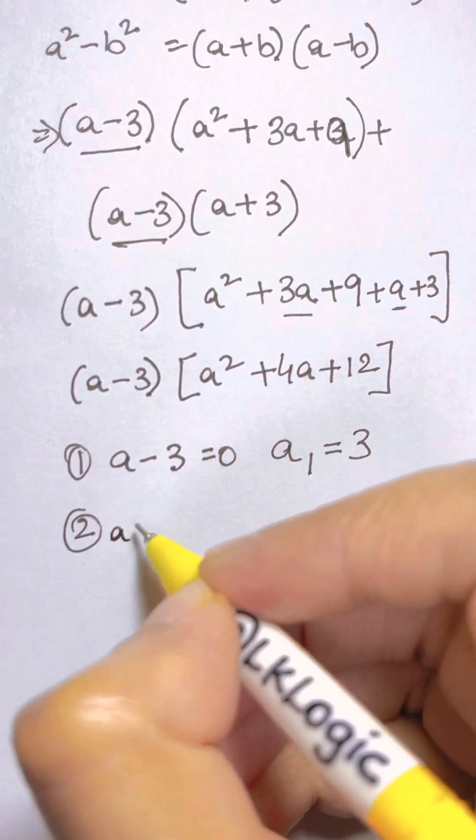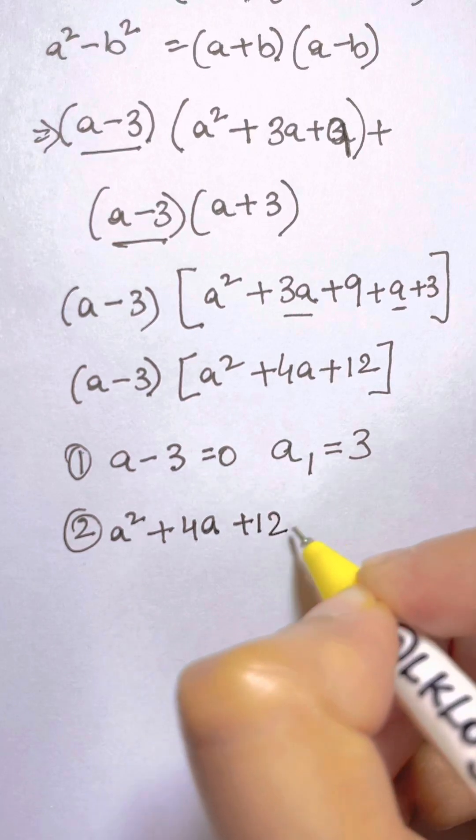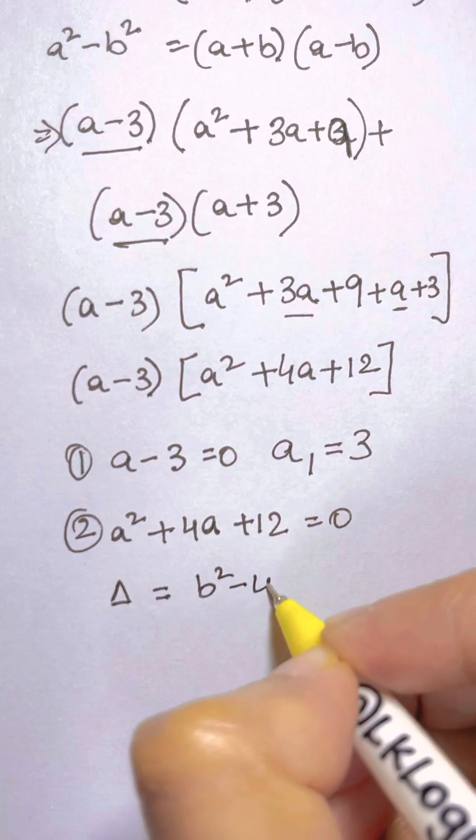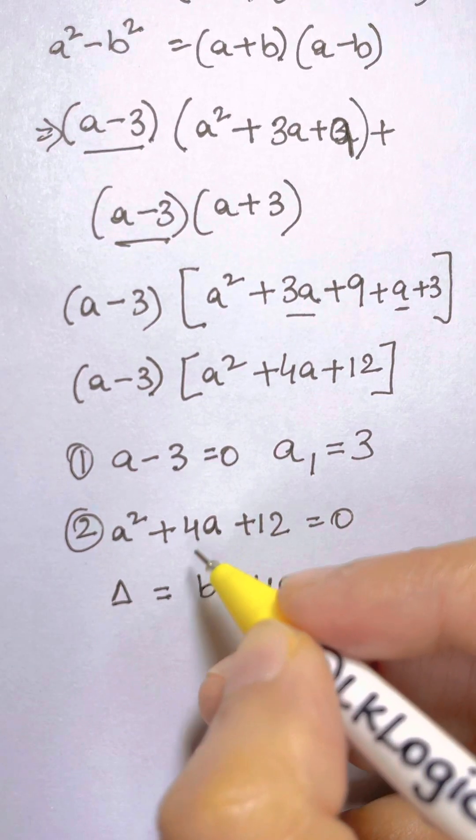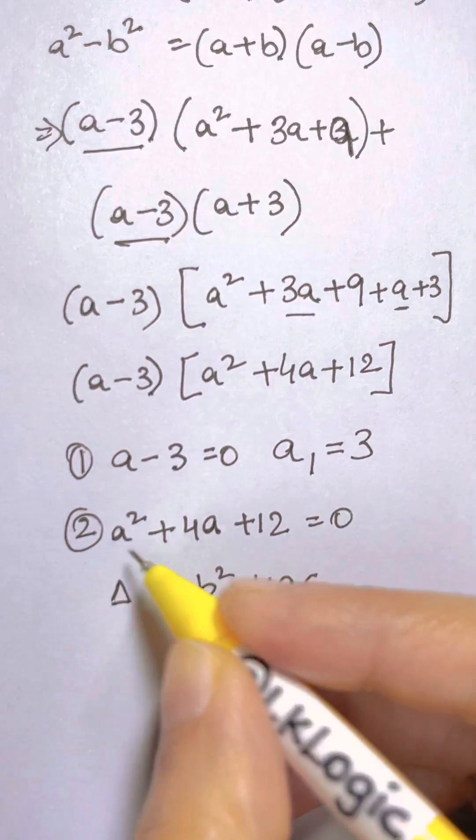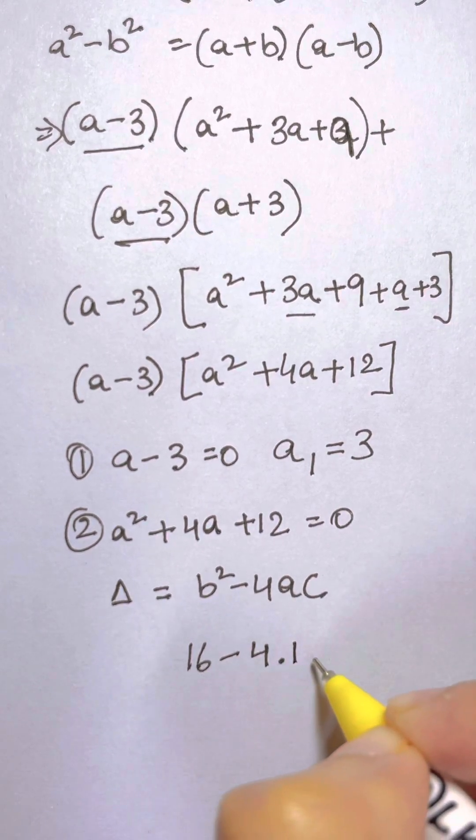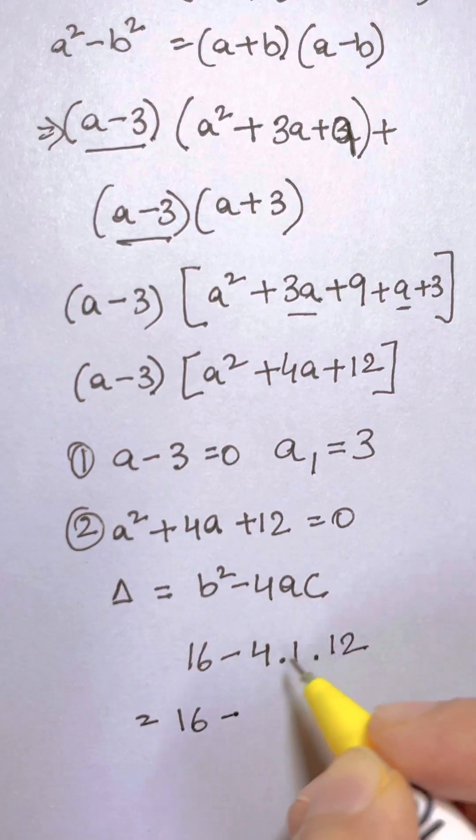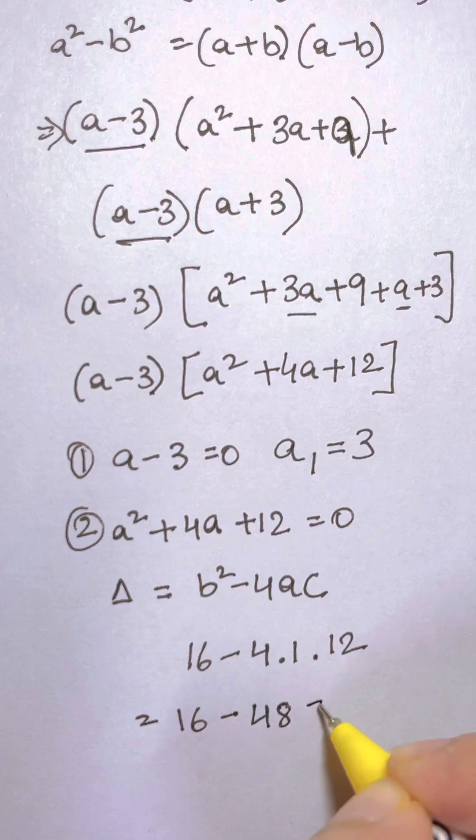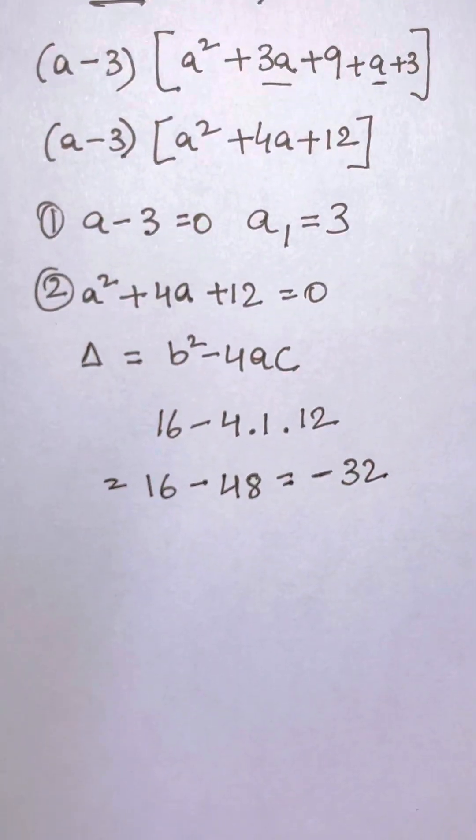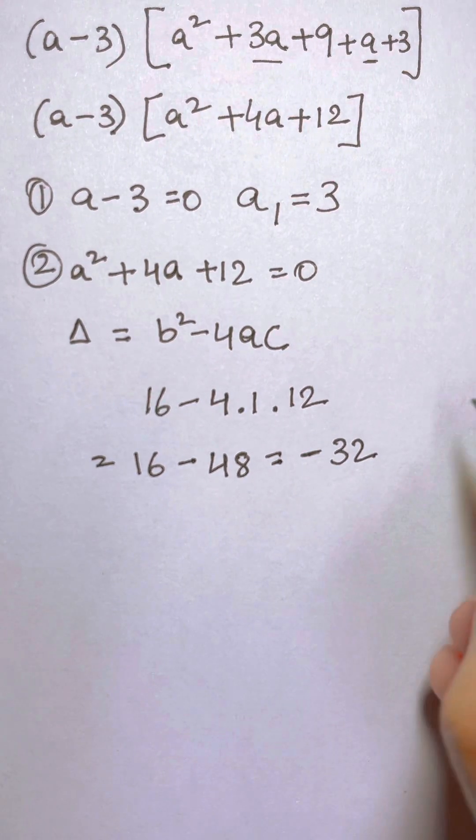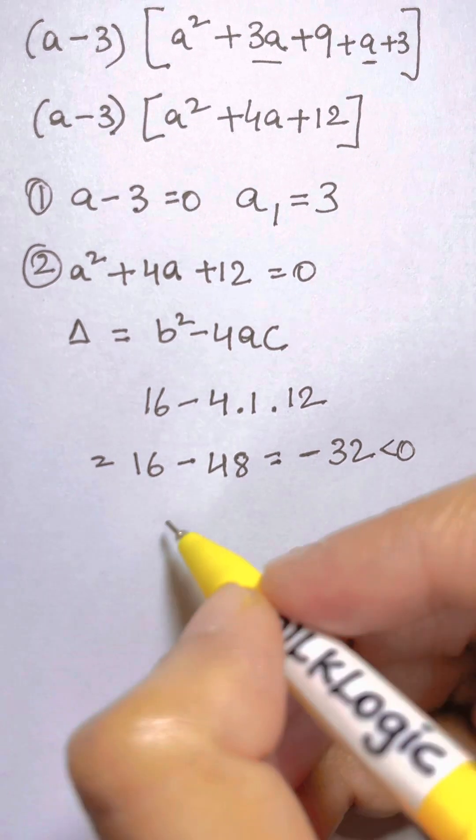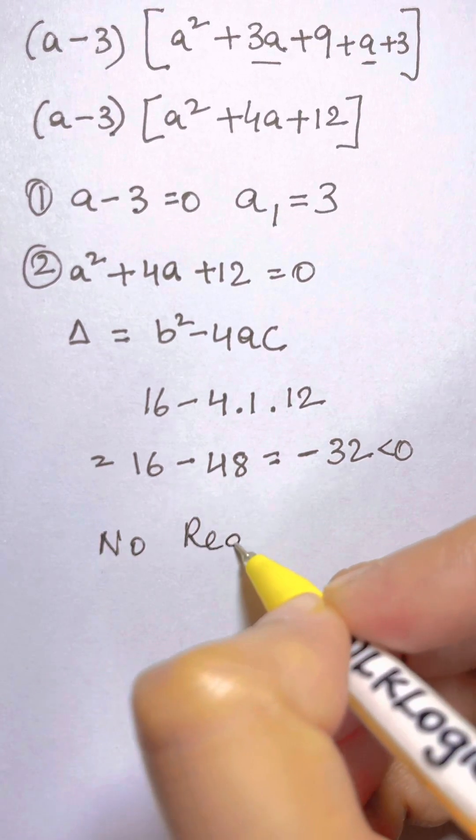a² + 4a + 12 = 0. So let's find out the delta, that's the discriminant. It is b² - 4ac. b is 4, so you have 4 times 4, 16 minus 4 times coefficient of a² is 1 and c is 12. So that is 16 - 48 which is equal to -32. And -32 is less than 0. So our discriminant is less than 0, so it does not have real roots. No real roots.